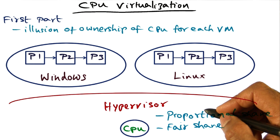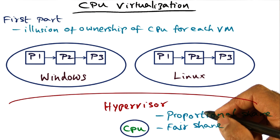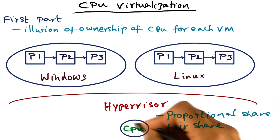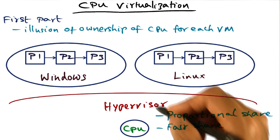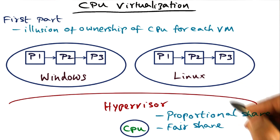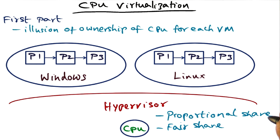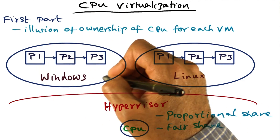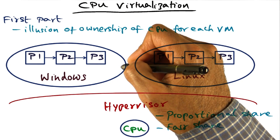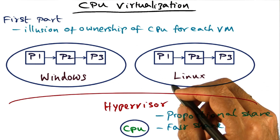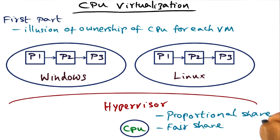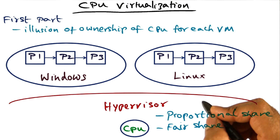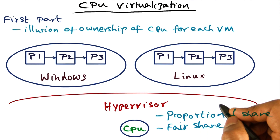Similar to the policy we discussed for memory allocation, one straightforward way to share the CPU among the guest operating systems is to give a proportional share of the CPU to each guest operating system, commensurate with the service agreement that the virtual machine has with the hypervisor. This is called the proportional share scheduler, and it is used in the VMware ESX server.